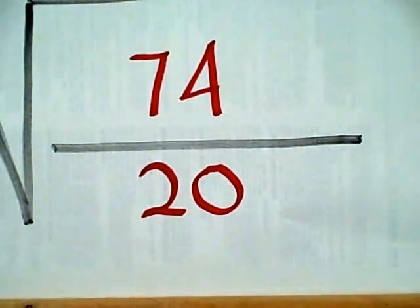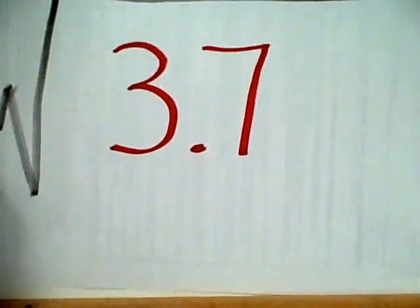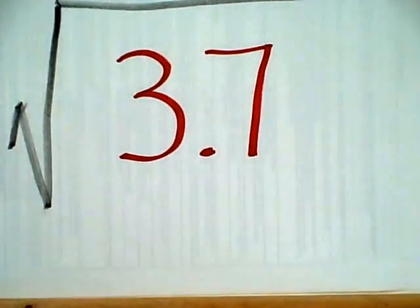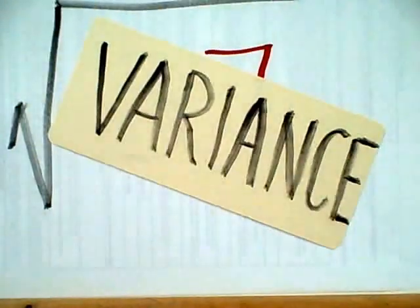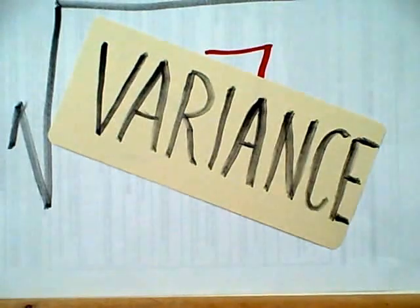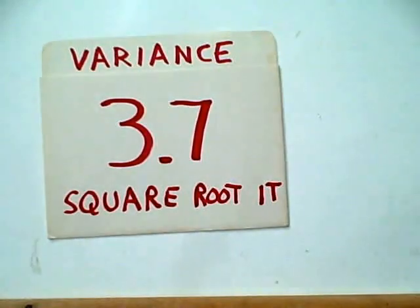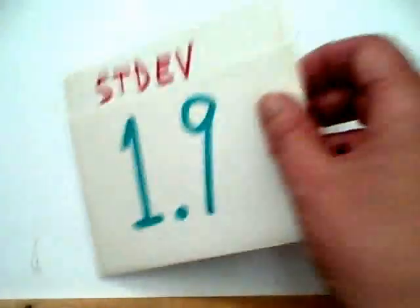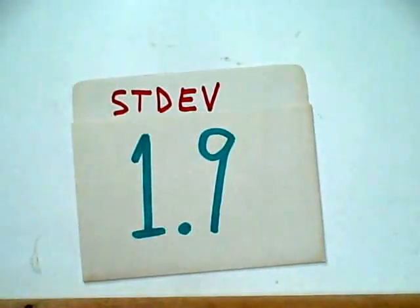Now, we have 74 over 20. That's 3.7. Now, this thing that we see right here, the 3.7, that's known as the variance. That's not the end of our calculation. We're going to take that variance and we're going to square root it, and that's going to be our answer. The standard deviation is 1.9.